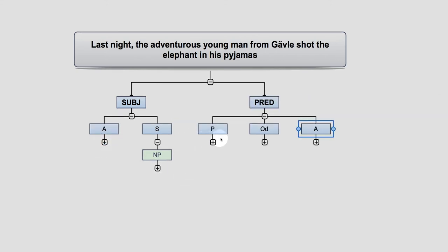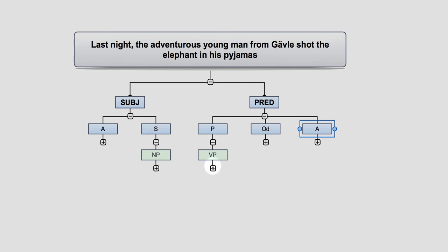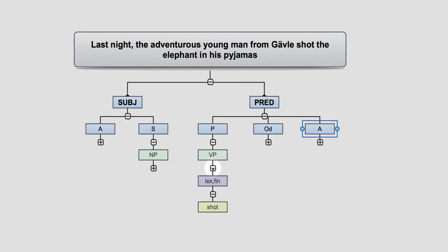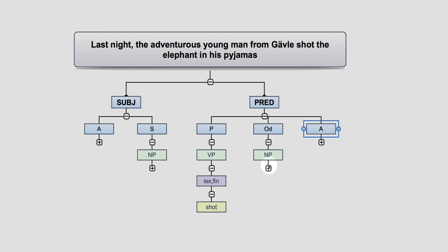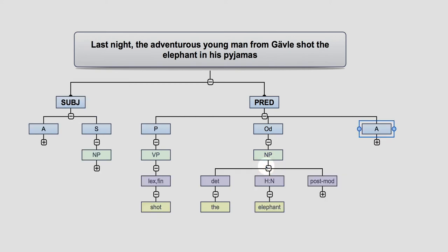On the right hand side we have the predicator, written as a verb phrase. The verb, because there's one word, is both lexical and finite: 'shot'. And then we have the object — I've written the direct object, but when you have one object it's just called an object. This realises a noun phrase and it's 'the elephant'.